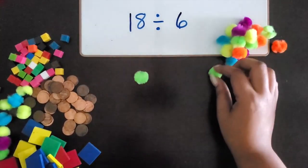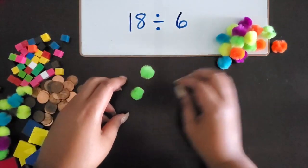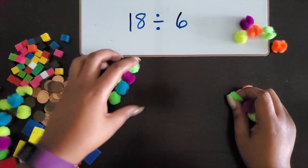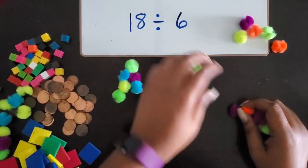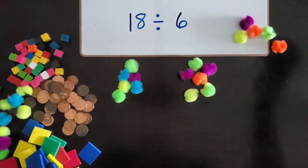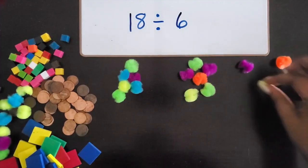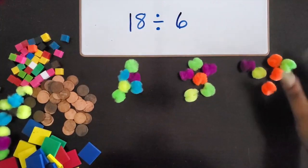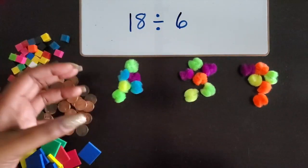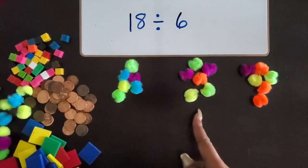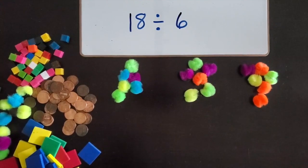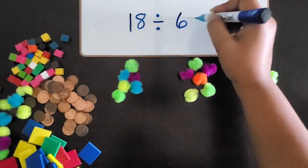So I would count out six: 1, 2, 3, 4, 5, 6. I know that's one group because six goes in each group. 1, 2, 3, 4, 5, 6 — that's another group. 1, 2, 3, 4, 5, 6 — that's another group. So I can see that I took 18 pom-poms and placed six in each group, and that gives me three equal groups. So 18 divided by 6 equals 3.